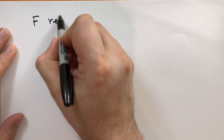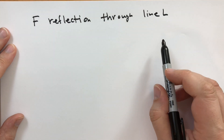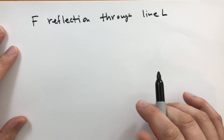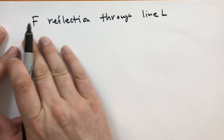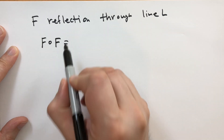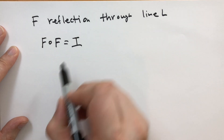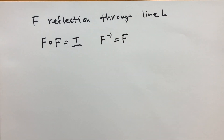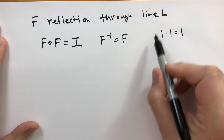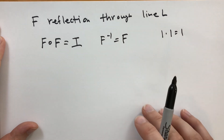Suppose F is a reflection through a given line L. Reflections through points are just rotations of 180 degrees, as proven in the last section. When we take F composed with itself, that's taking the mirror image of the mirror image, and that gives you the identity mapping. So the inverse of F is indeed itself. This doesn't generally happen with real numbers — there's really only one number (1) where multiplying by itself gives 1 — but there are infinitely many reflections through given lines, each of which is its own inverse.